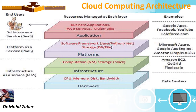Infrastructure as a Service covers computation, storage, CPU, memory, and disks. Hardware examples include data centers. This is the simple cloud computing architecture.